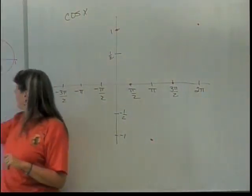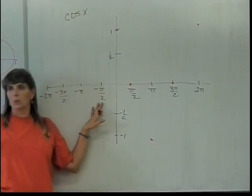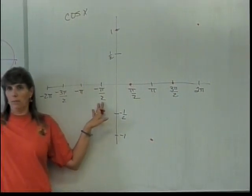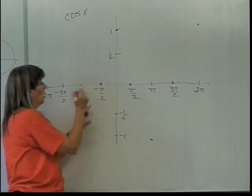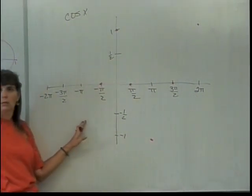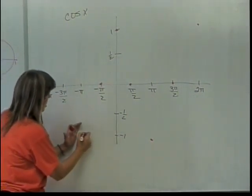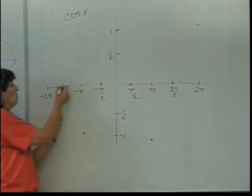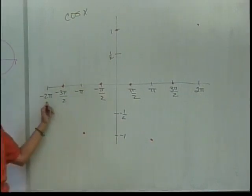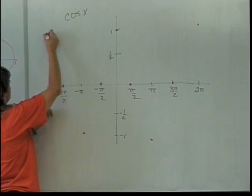Working my way backwards this time, clockwise around the circle. When I get to negative pi over 2, what's the cosine of negative pi over 2? 0. When I get to negative pi, what's the cosine? Negative 1. When I get to negative 3 pi over 2, the cosine is 0. And when I get to negative 2 pi, the cosine is 1.